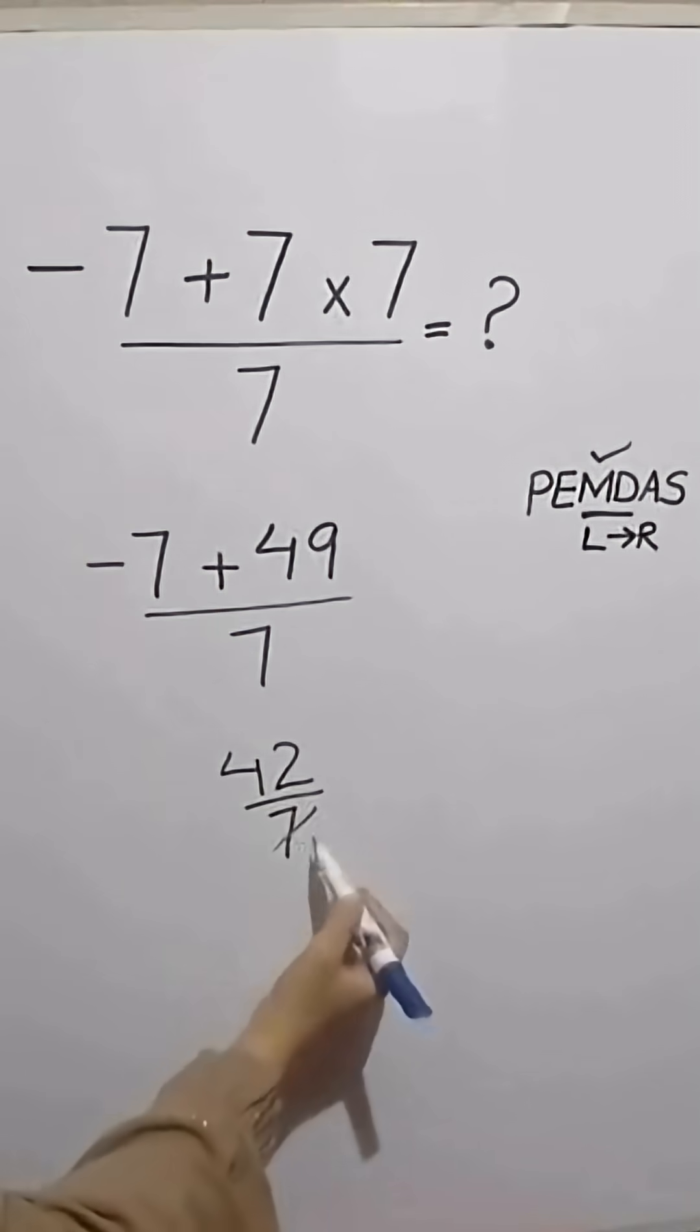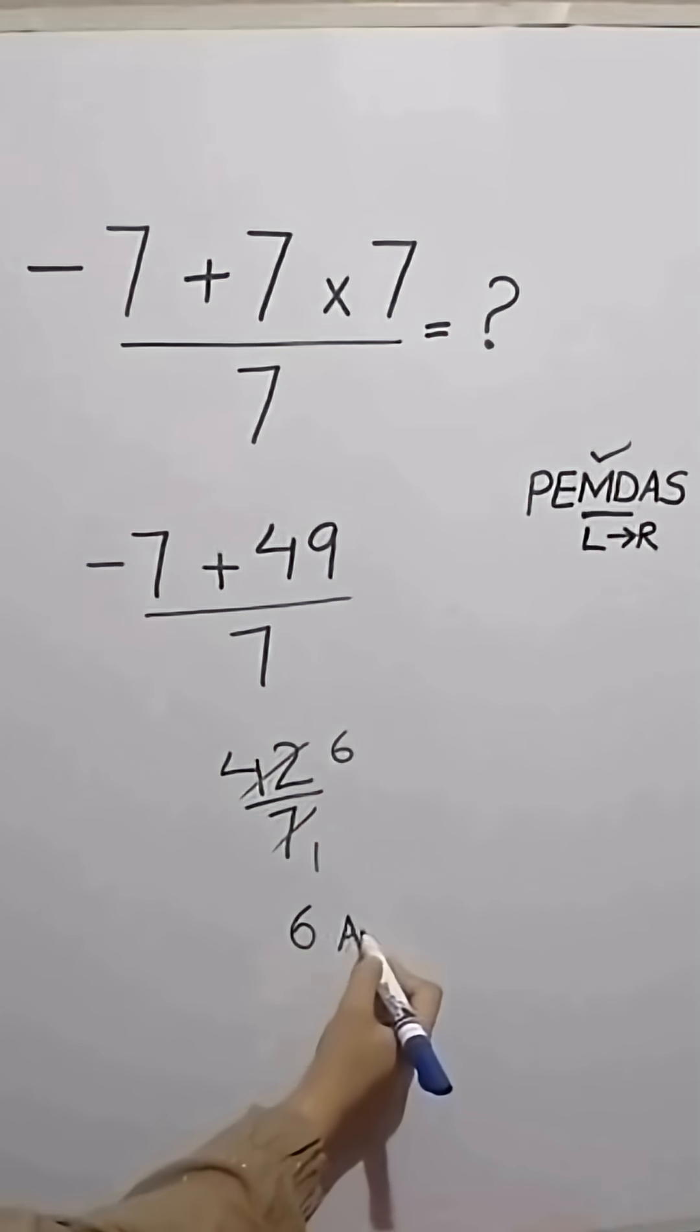So 42 over 7 which equals 6. Therefore the correct final answer is 6.